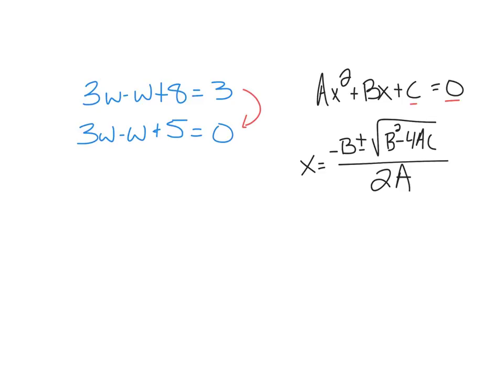What it does is it takes the coefficients of the non-zero side, a being the lead coefficient. In this case a is three, the b coefficient is negative one, and the c coefficient is five.